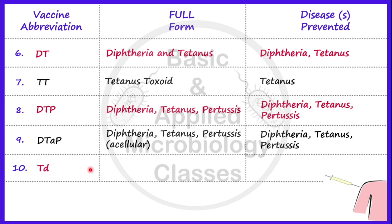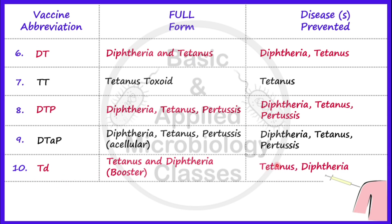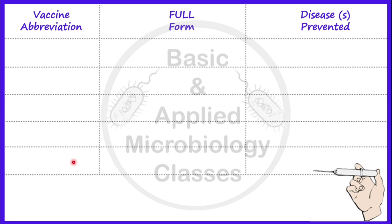Now let's take the next vaccine, that is TD. TD is a kind of booster dose, and it is for tetanus and diphtheria — that's why its full form is Tetanus and Diphtheria. The causal agents are bacteria, as previously discussed. The route of administration for DT, TT, DTP, DTaP, and TD is common — they are all given by intramuscular route.